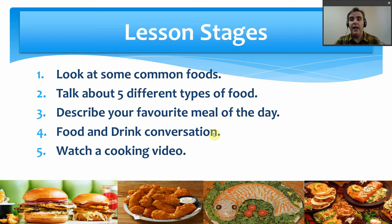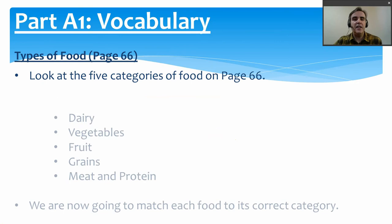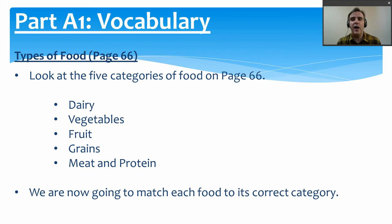Let's start by thinking about different types of food. On page 66 of your textbook it shows us five categories of food — five different types. We have dairy, vegetables, fruit, grains, and meat and protein. Within each of these categories we have different types of food.